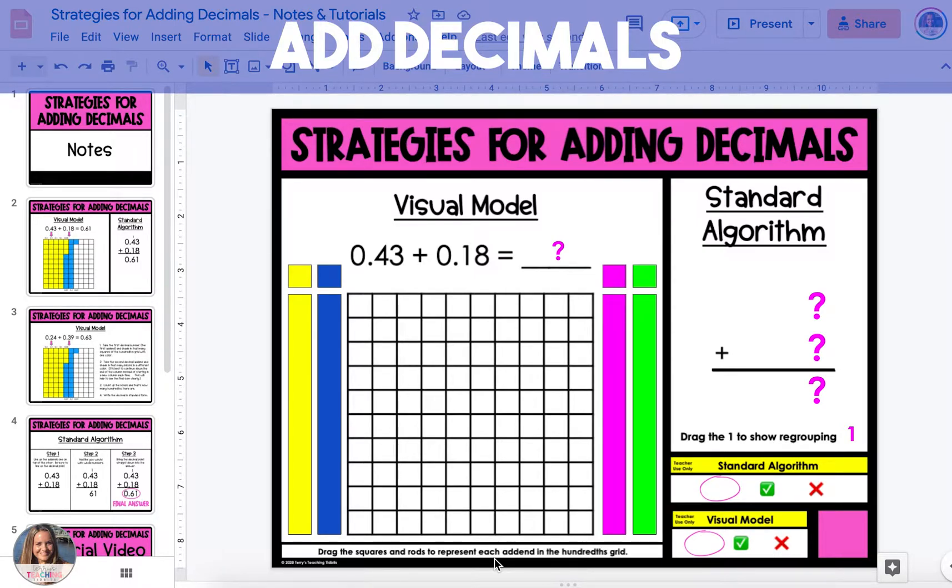We're going to start with the visual model. There's a hundredths grid on the slide, and we're going to shade it in to represent both of the addends, 43 hundredths and 18 hundredths.